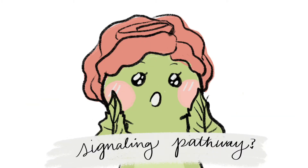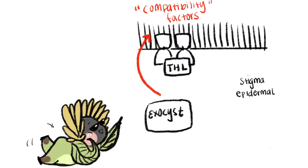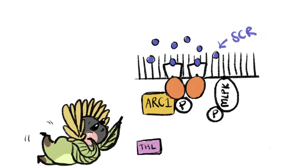Whoa, can you tell me more about this signaling pathway? Of course. When there isn't any pollen present, the SRK is kept inactive by binding to a small protein called thioredoxin. In the meantime, exocyst complexes in the stigma epidermal cells constantly secrete compatibility factors, which is what allows pollen tube growth to occur in normal conditions. When SCR is detected by the stigma cell wall, thioredoxin is knocked off and SRK is now in its active form.